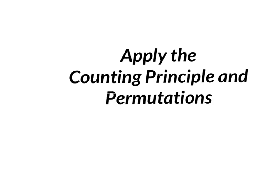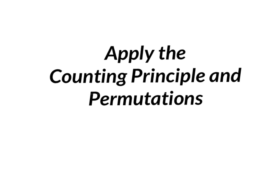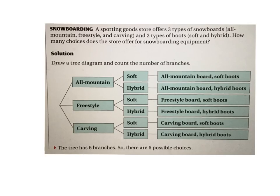Alright guys, totally new chapter today - starting Chapter 10. We're going to apply the counting principle and permutations, basically counting stuff and counting choices. First of all, one way to count stuff is using what's called a tree diagram. To be honest, we're not going to do this very much because it takes up a lot of room and a lot of paper, but I do need to show it to you.